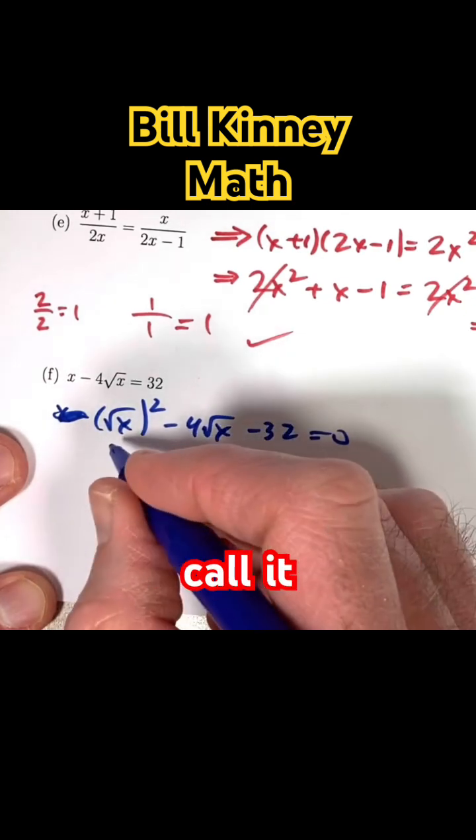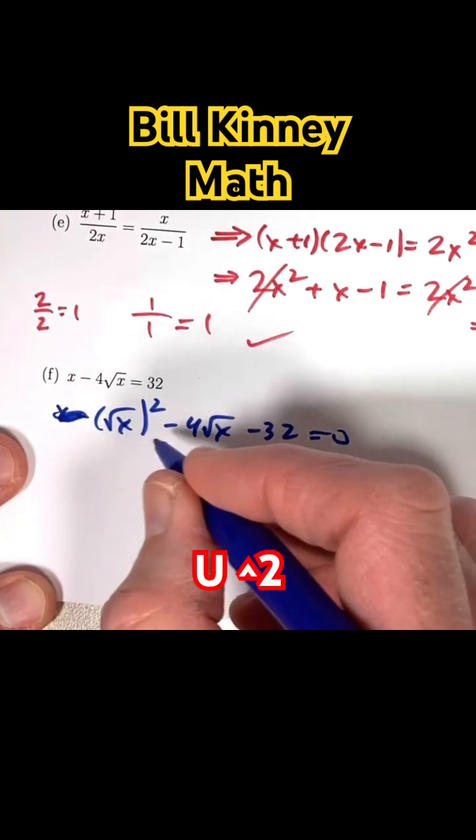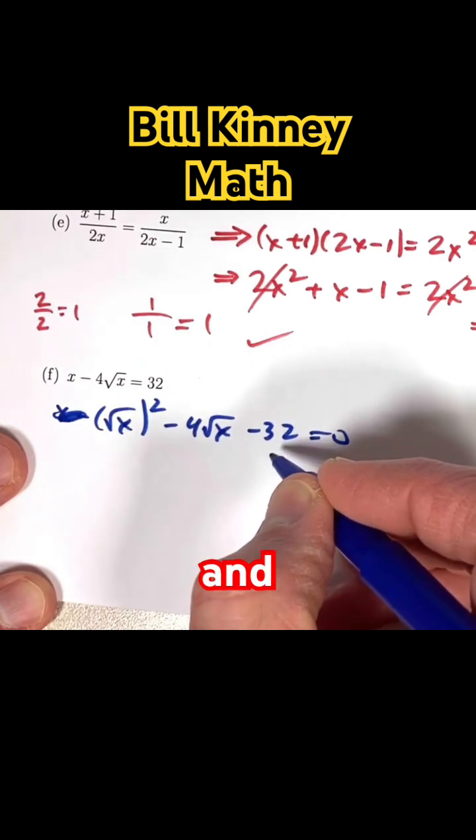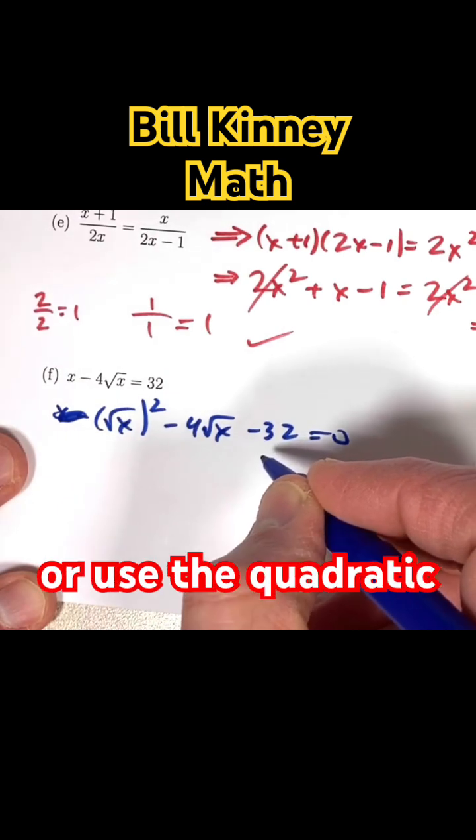You could give it a different name if you like. Call it u or something. u squared minus 4u minus 32. And so we could try to factor or use the quadratic formula.